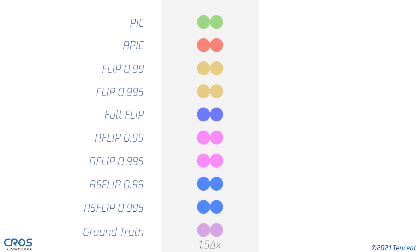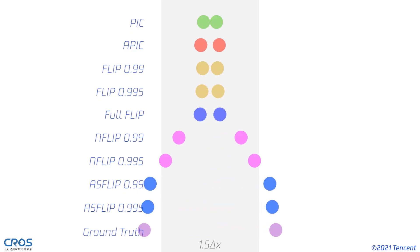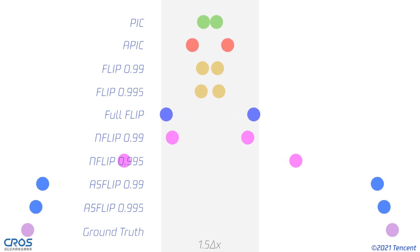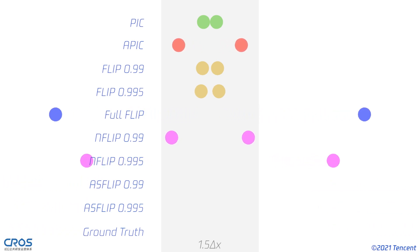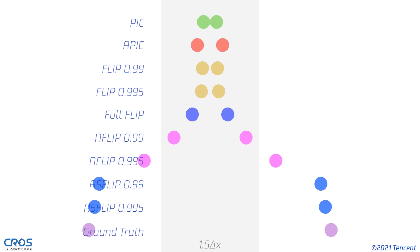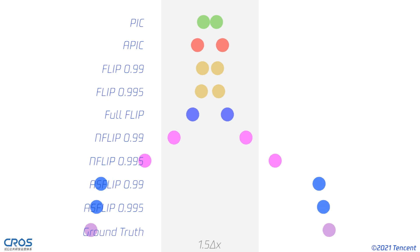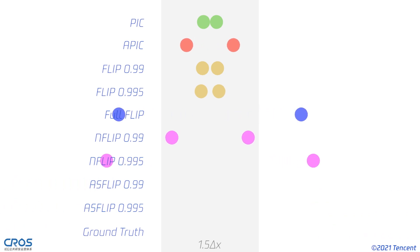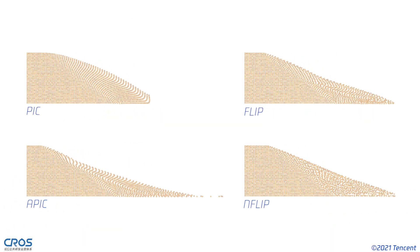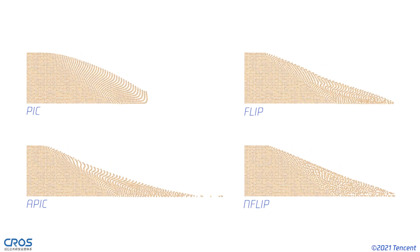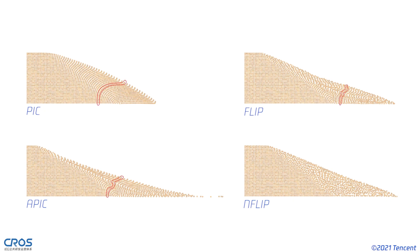We name this scheme NFLIP. In this example, two particles are supposed to move away from each other. Particles advected by PIC, APIC, or a damped FLIP stop moving after the simulation start. On the other hand, particles advected by NFLIP or full FLIP can move further away. In sand collapse, some particles could stay in the same but curved line due to the spatial trap when simulated with PIC, FLIP, or APIC. Advecting with NFLIP eliminates this artifact.